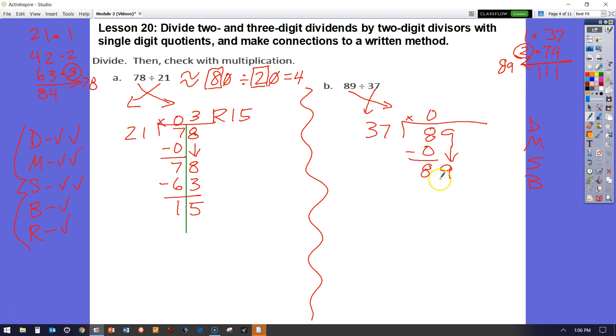I can pull 2 thirty-sevens out of this. 2 times 37 is 74. When I do my subtraction, 9 minus 4 is 5. 8 tens minus 7 tens is 1 ten. So you have 2 with a remainder of 15.